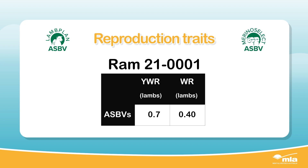There are two reproduction traits available. The yearling reproductive trait is separate because yearling ewe performance is affected by puberty. This trait refers to the ram's daughters that lamb as a one-year-old, and the yearling trait is expressed as YWR.